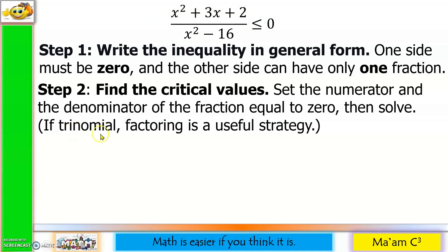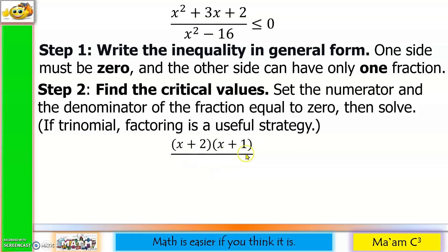Step 2: Find the critical values. Set the numerator and the denominator of the fraction equal to 0, then solve. If trinomial, factoring is a useful strategy. Our numerator here is a trinomial and it is factorable. The factors are x plus 2 and x plus 1. Quick check: 2 plus 1 equals 3, that should be the middle term; 2 times 1 equals 2, that should be the third term. Factors are correct. For the denominator, we have a difference of two squares, so our factors are x minus 4 and x plus 4.